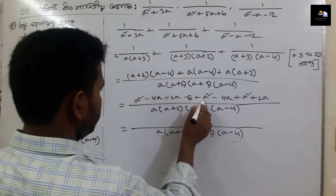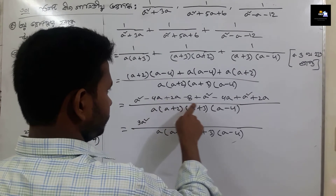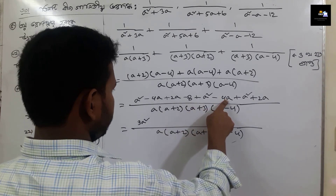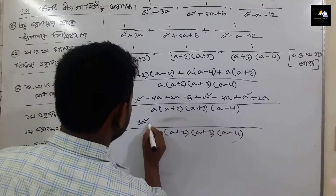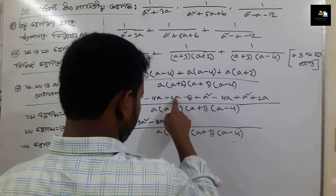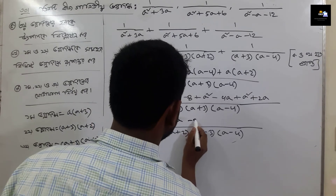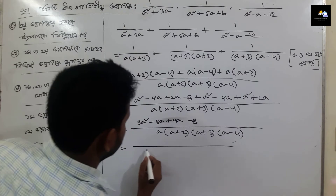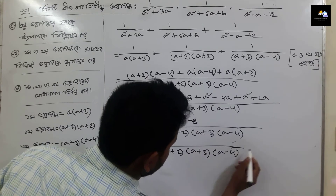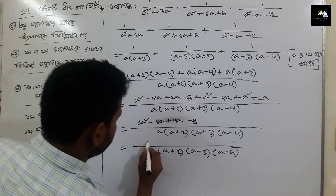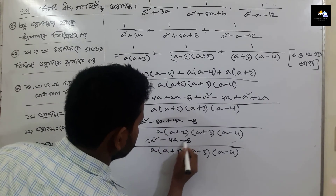Now: 1 to a square, 2 to a square, 3 to a square, then we have 3a squared. And we have minus 4a and we have minus 4a. We have plus 2a, plus 2a, minus 4a, minus 4a. Plus 2a, plus 2a, plus 4a and we have minus 8a, minus 8. Okay? So a into a plus 2a plus 3, a minus 4.